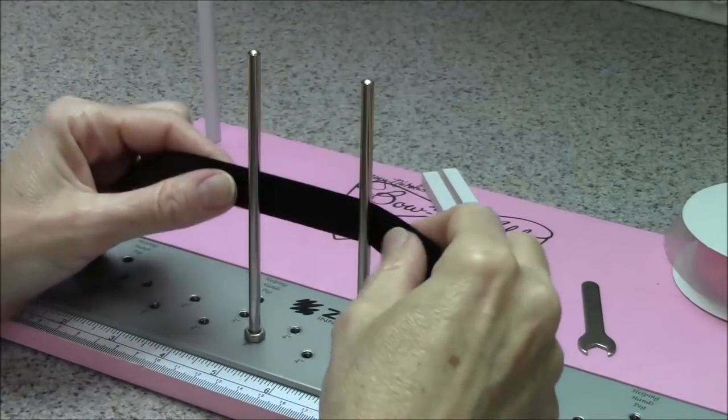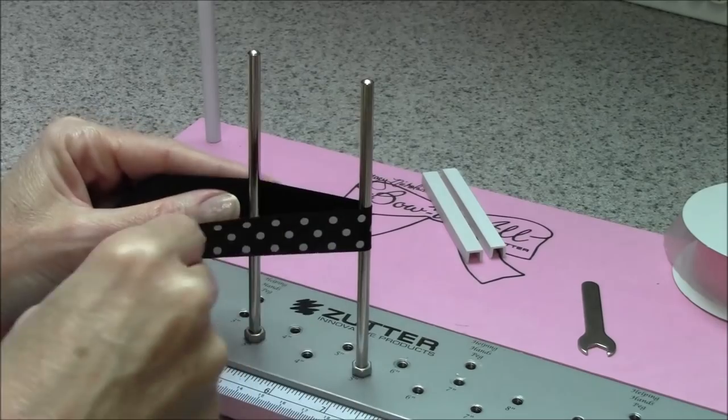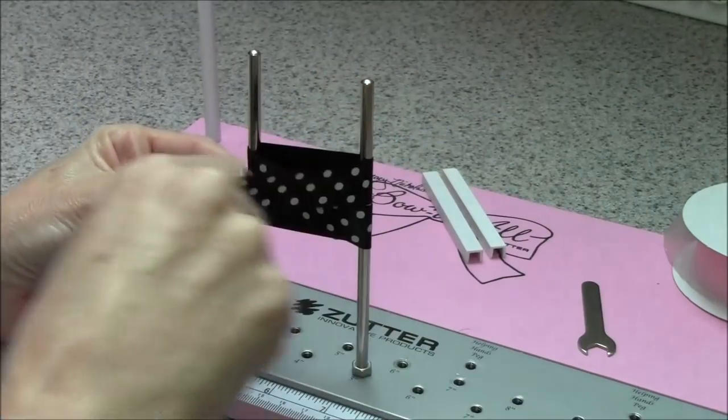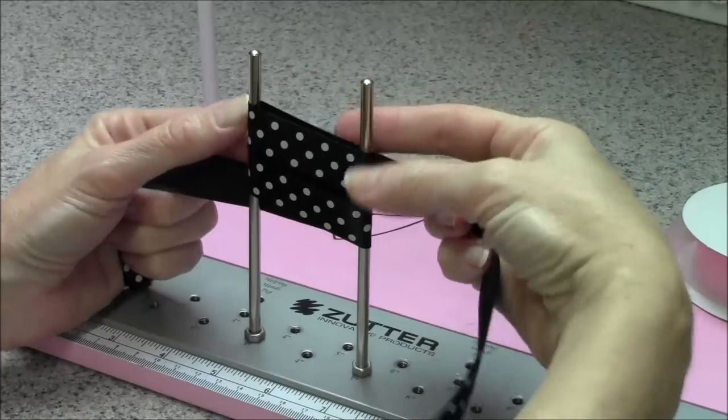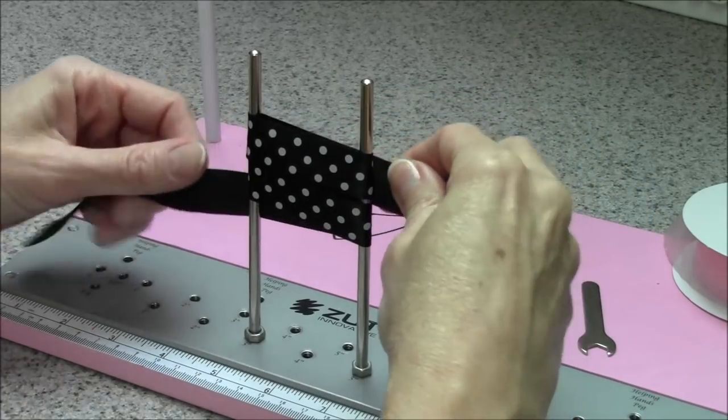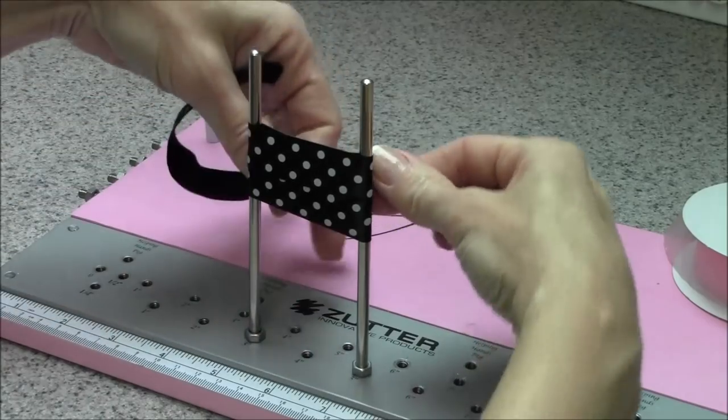So the easiest way around that is to not figure eight as you're wrapping, just wrap around the outside of both pegs. We're going to do a two loop bow so I've wrapped around twice.